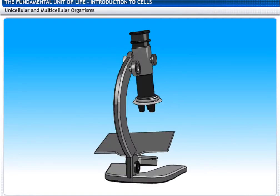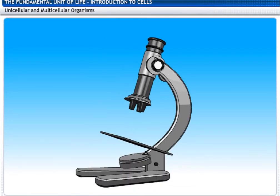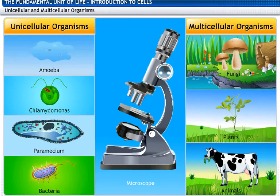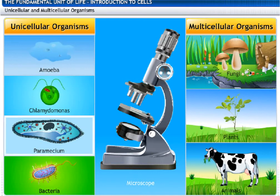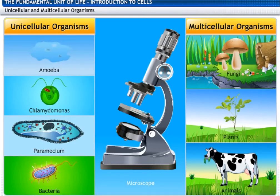The development of the microscope led to the discovery of single and multiple-celled organisms. Organisms like amoeba, chlamydomonas, paramecium, and bacteria have single cells which constitute the whole organism. These organisms are called unicellular organisms.